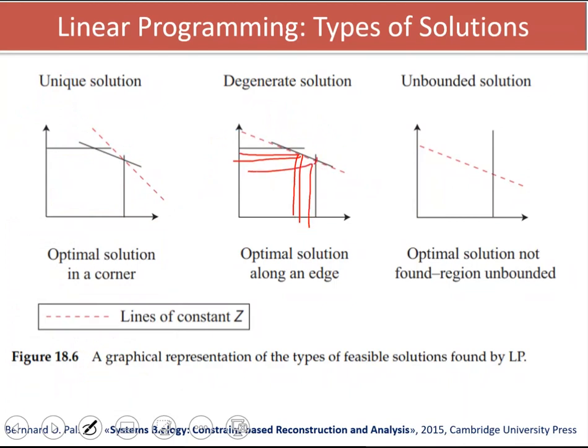This point here is also a solution. They all lie within the objective function. So we have multiple vectors. Let's say we have x1, x2 values here. Different combinations of x1, x2 values will give us the optimum value for the objective function.